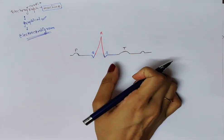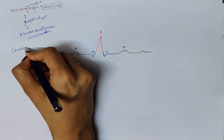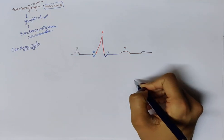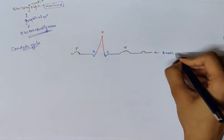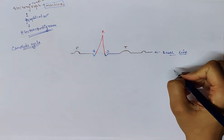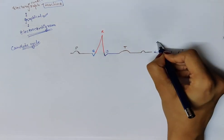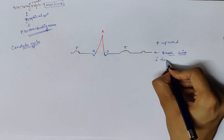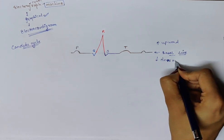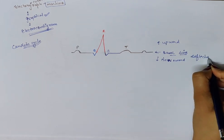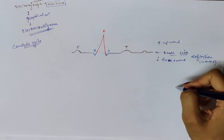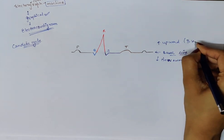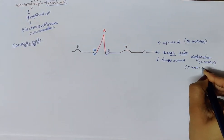This machine shows the cardiac cycle of a patient. In this graph, you will see a basal straight line, and in this basal line you will see some deflections — some towards the upward and some towards the downward. These are the waves. There are a total of three upward waves and two downward waves.